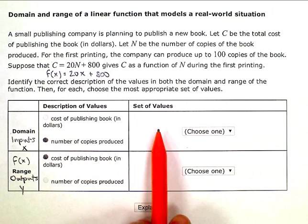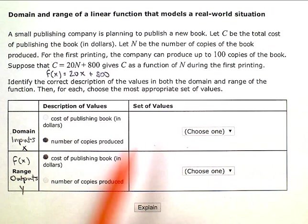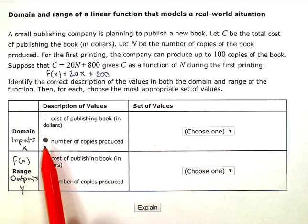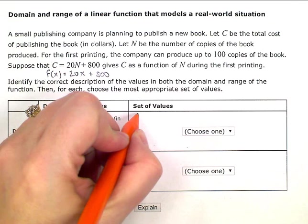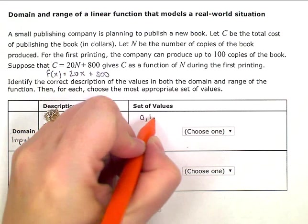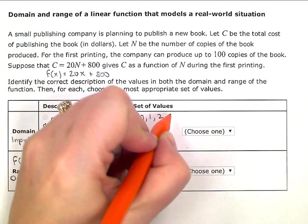Now I just need a set of values here. So we need to think about the context for a minute. So I could produce zero books, I could produce one book or two books or three books.